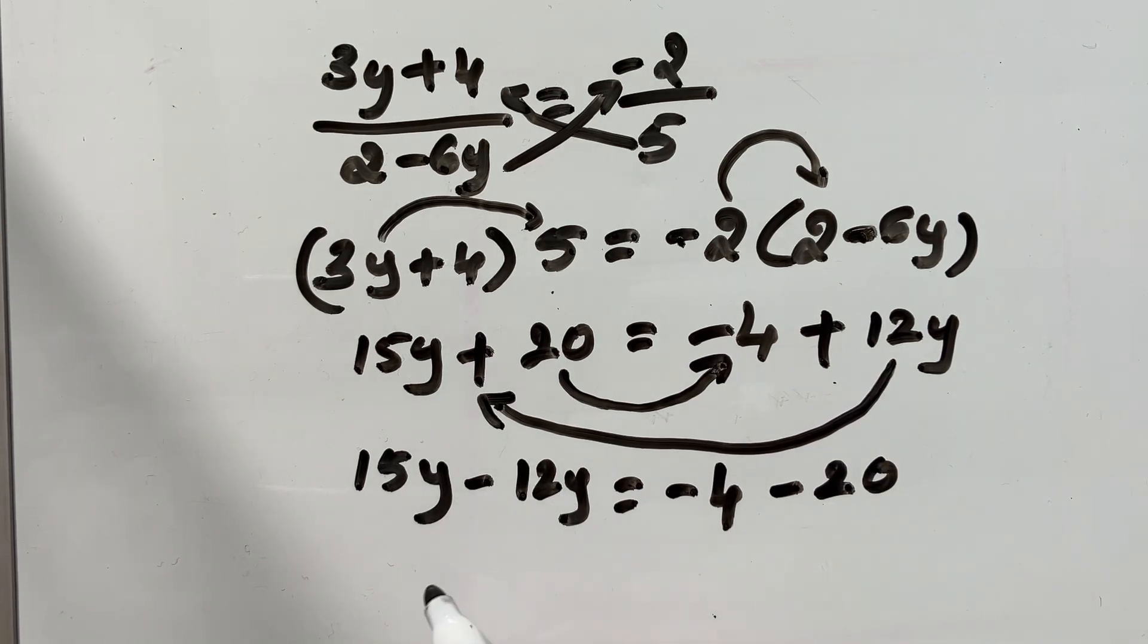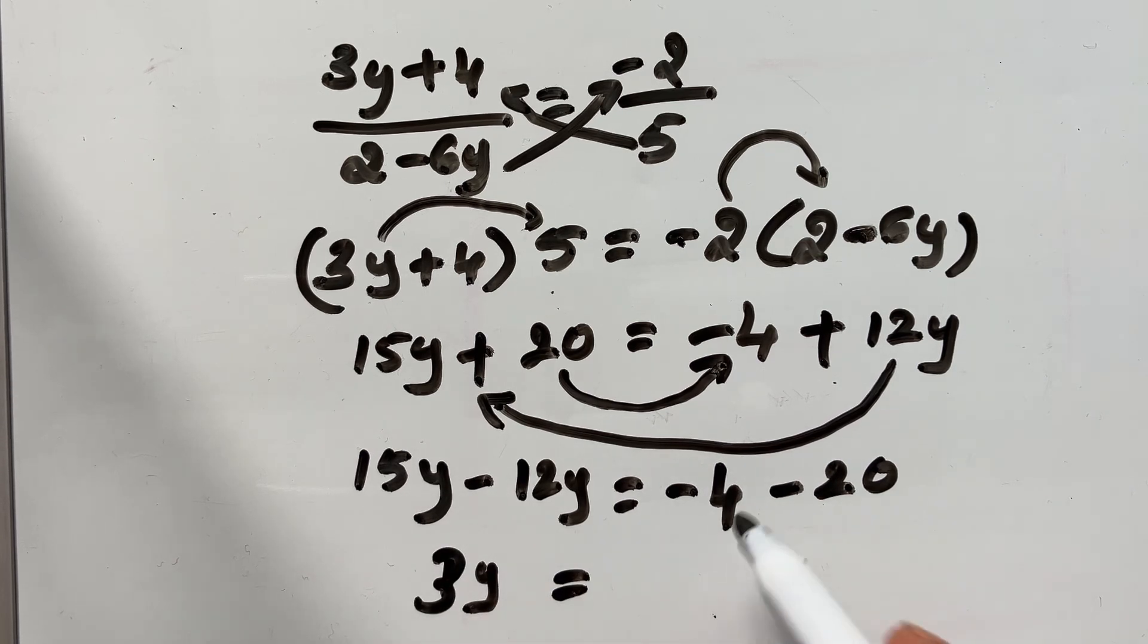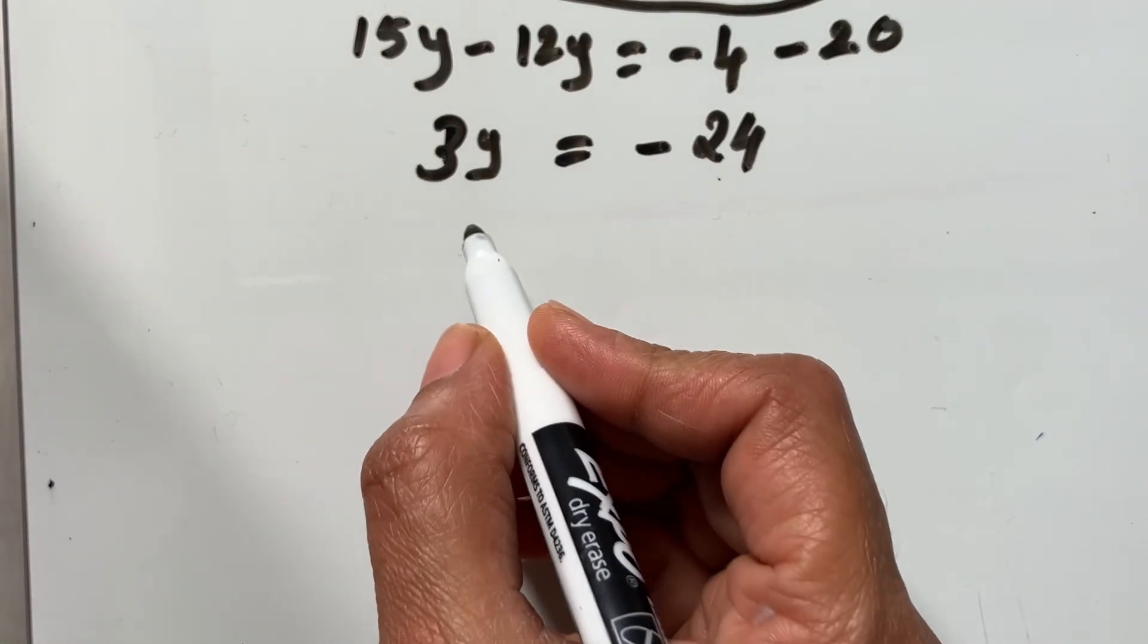15 minus 12 is 3. 3y is equal to negative 4, negative 20. Or minus 4 minus 20. Minus 24. Both negative sign. So, you should add. But keep the negative sign.